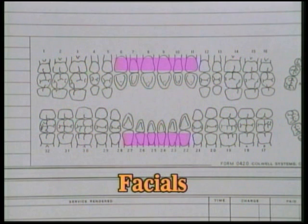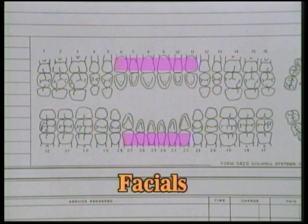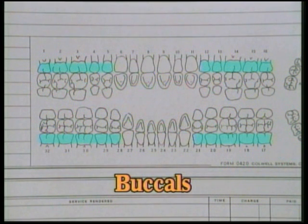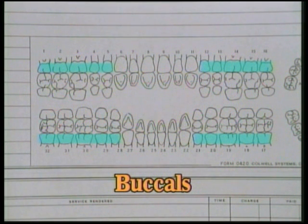Continuing the anterior teeth: 22, 23, 24, 25, 26, and 27. The buccal surfaces are the tooth surfaces closest to the cheeks on the posterior teeth.